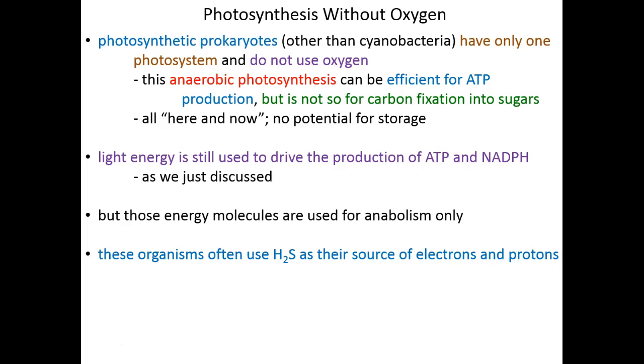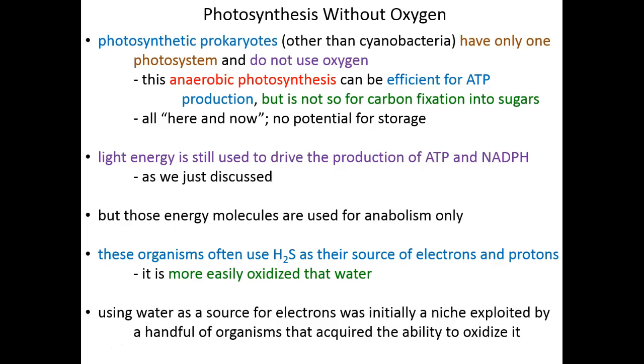These organisms often use hydrogen sulfate, H2S, as their source of electrons and protons. It's more easily oxidized than water. It's easier to strip those electrons off, and so again, if only one photosystem is working, you can oxidize this compound in a way that water can't be oxidized. Using water as a source from electrons was initially a small niche exploited by a handful of photosynthetic organisms that had efficient photosystem 2s and 1s communicating with each other through an electron transport chain.